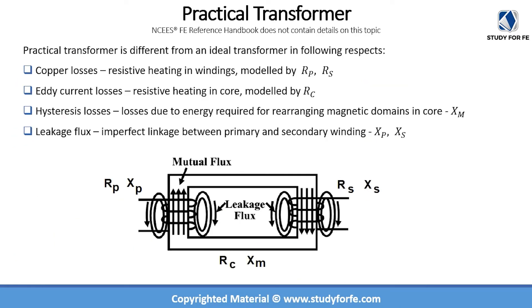Let us now discuss the practical transformer, which includes all the complexities we ignored in the ideal transformer. For the practical transformer, you have copper losses modeled by R_p and R_s on the primary and secondary windings respectively — these represent resistive heating in the windings. Then we have eddy current losses due to resistive heating in the core, modeled as R_c.